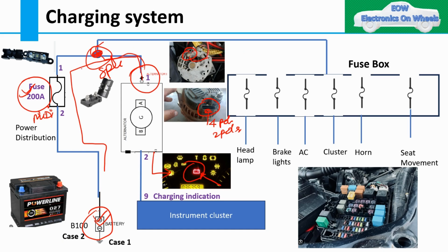The charging indication will only appear when your battery is not charging — it will always be red in color. In engineering terms we call it a telltale; in layman terms it is the indication. These indications follow specific standards — you will always see this symbol in red only, never in green or yellow. The second pin of the alternator connector sends this charging indication signal to the instrument cluster.